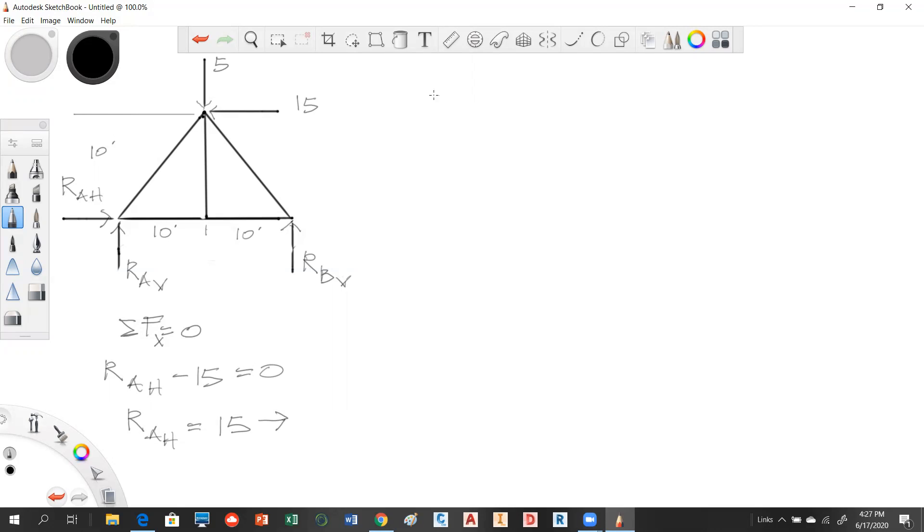All right, sum of forces in Y. Sum of forces in Y have to equal 0 by equilibrium. So in the Y we have our AV plus our BV minus 5 has to equal 0 by equilibrium. What we get is our AV plus our BV is equal to 5. We don't know what the distribution is here, so we'll take a moment.